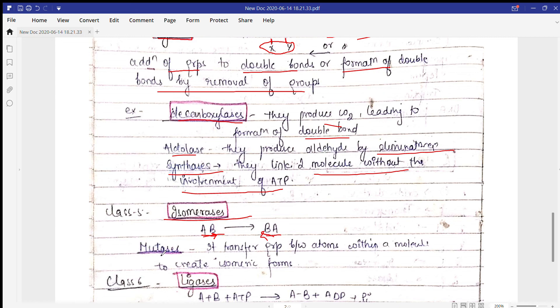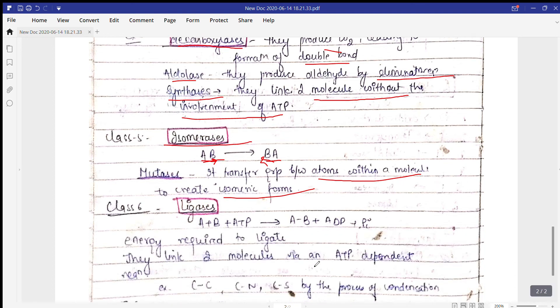Mutase is an enzyme that transfers the group between atoms within a molecule to create an isomeric form, as in the example from glycolysis.